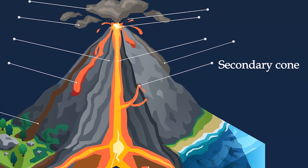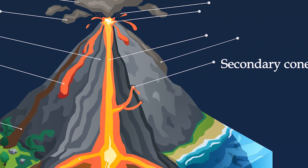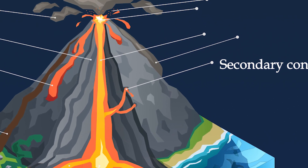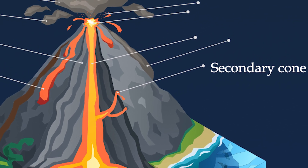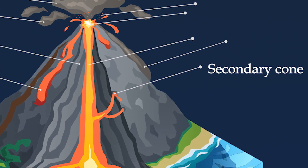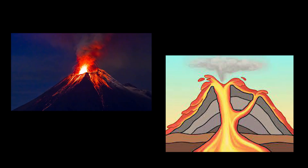Secondary Cone, also known as a parasitic cone, secondary cones build up around secondary vents that reach the surface on larger volcanoes.